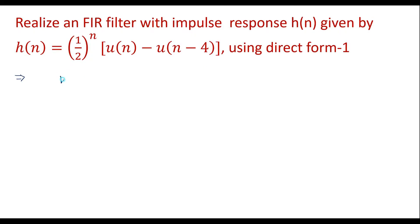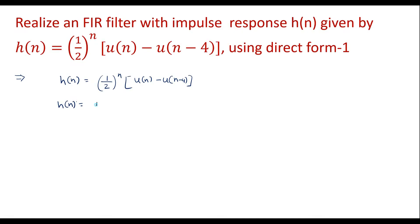Here h(n) is given as h(n) = (1/2)^n · [u(n) - u(n-4)]. The term u(n) - u(n-4) indicates that h(n) is defined for n = 0 to 3. That is, h(n) = (1/2)^n for n = 0, 1, 2, and 3. Its value is 0 otherwise.